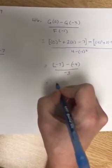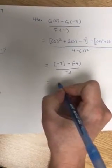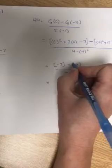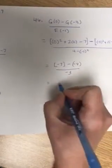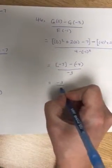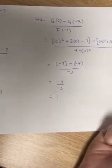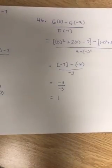So now I just have to be careful of my negatives. Negative 7 minus negative 4 is the same thing as negative 7 plus 4, which is negative 3 over negative 3. Anything over itself is 1. So for number 46, your answer is 1.